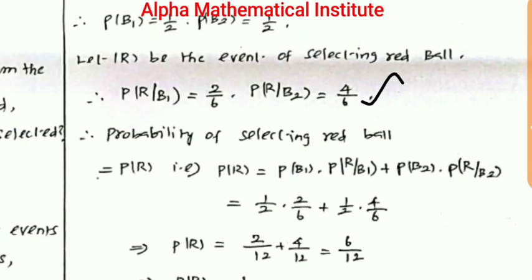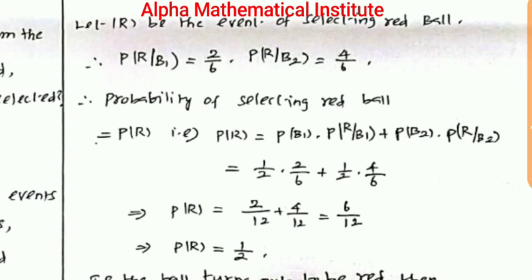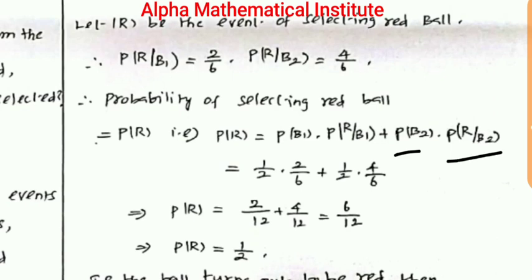Now we calculate the total probability of selecting a red ball. P(R) = P(B1) × P(R | B1) + P(B2) × P(R | B2) = (1/2) × (2/6) + (1/2) × (4/6). Simplifying, P(R) = 1/2.